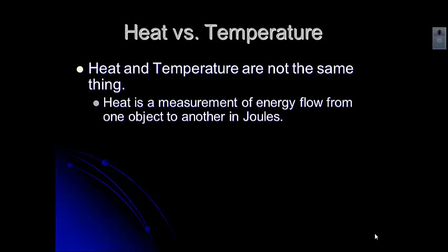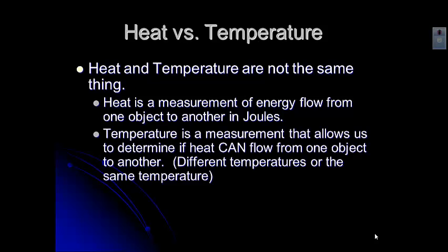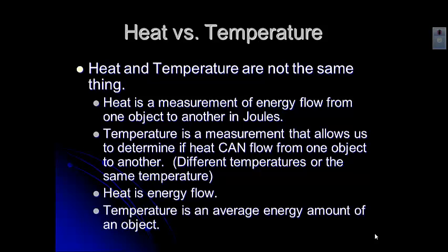Heat is what we use to measure the energy flow from one object to another, in joules. Temperature tells us whether or not heat can flow from one object to another. If there's a temperature difference, heat can flow, and it will flow from the hotter object to the colder object — always. Heat is just that energy flow.